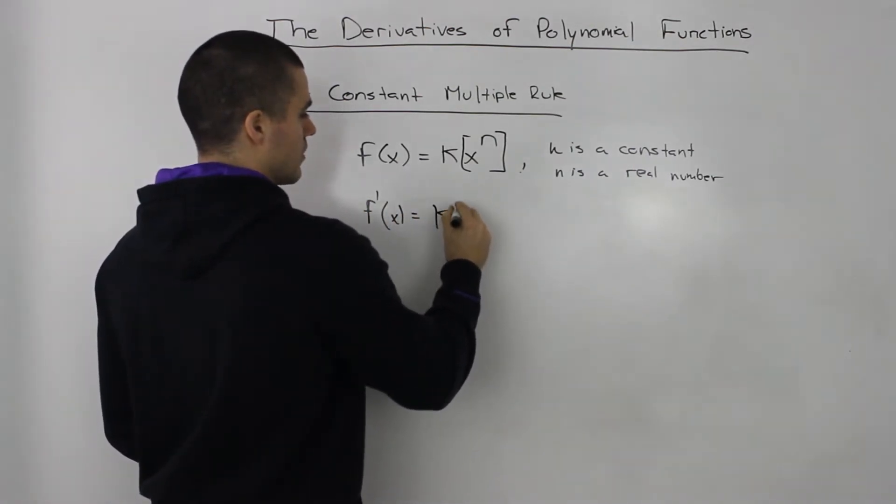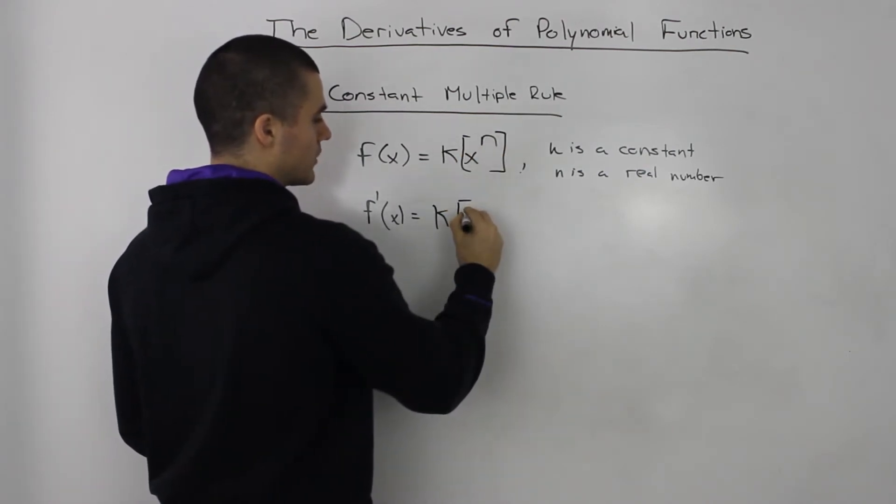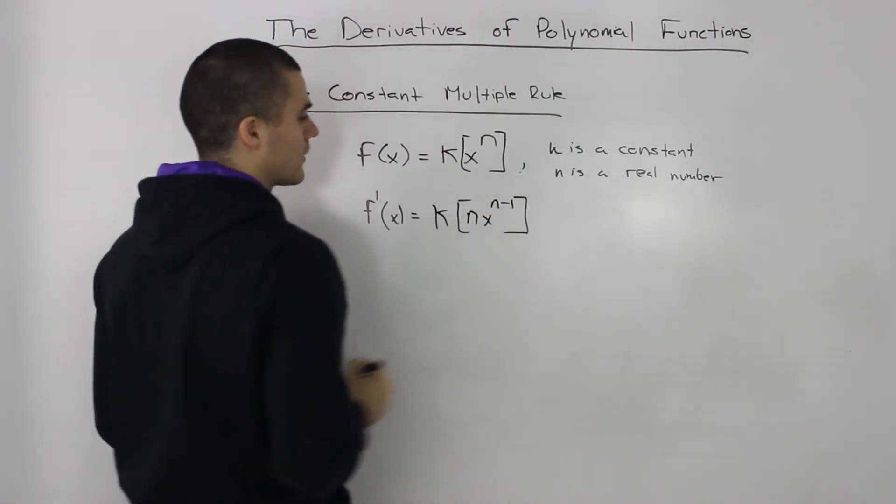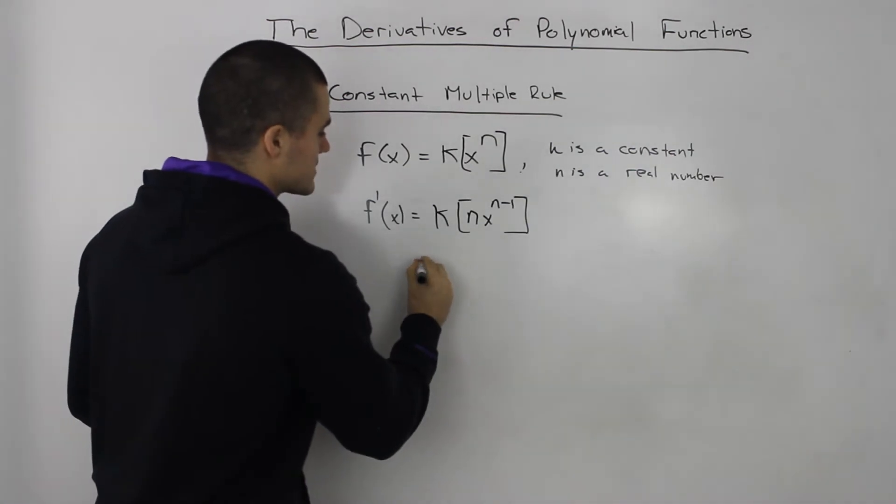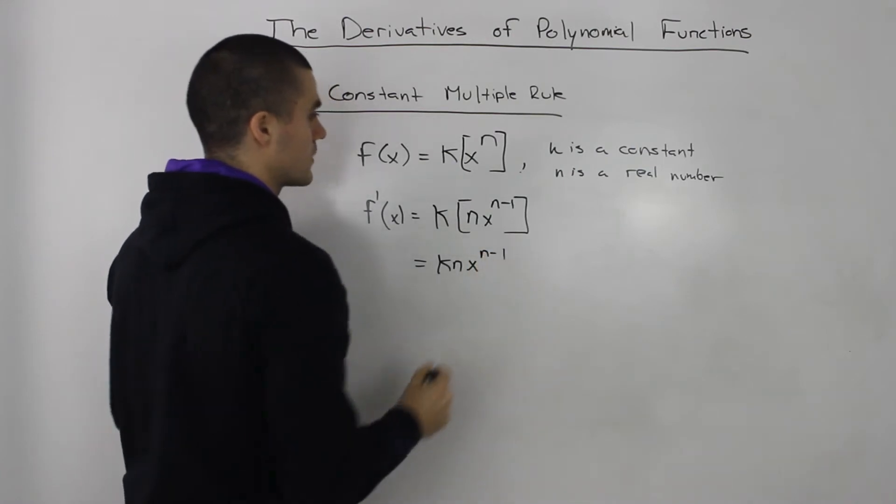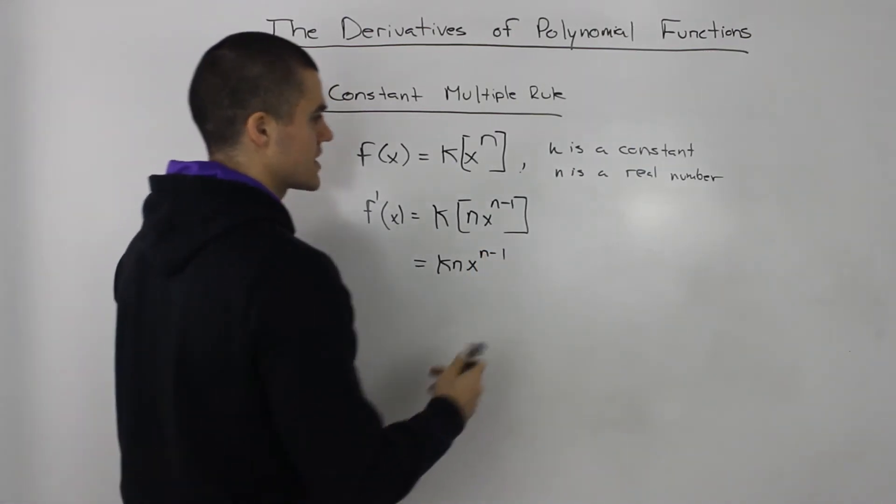And then you can just multiply the k and the n together, so it'll be kn x to the power of n minus 1. Very easy. So for example,